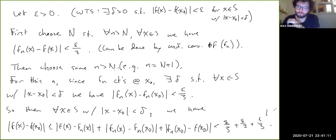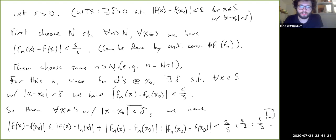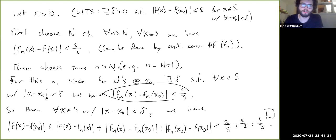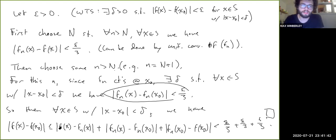This works because we chose delta so that the middle term is less than epsilon/3 for all x satisfying |x − x₀| < delta, while the outer two terms are automatically less than epsilon/3 for all x and x₀ by virtue of our choice of N — that's what the uniformity guarantees.